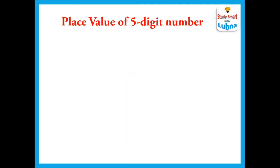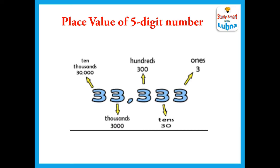Here is another example of a 5-digit number for you. The number is 3, 3, 3, 3 and 3. We are going to find the place value of all the digits. The first 3 is in ones, so its place value is 3. The second 3 is in tens, so its place value is 30. The third 3 is in hundreds, so its place value is 300. The fourth 3 is in thousands, so its place value is 3,000. And the fifth 3 is in ten thousands, so its place value is 30,000.